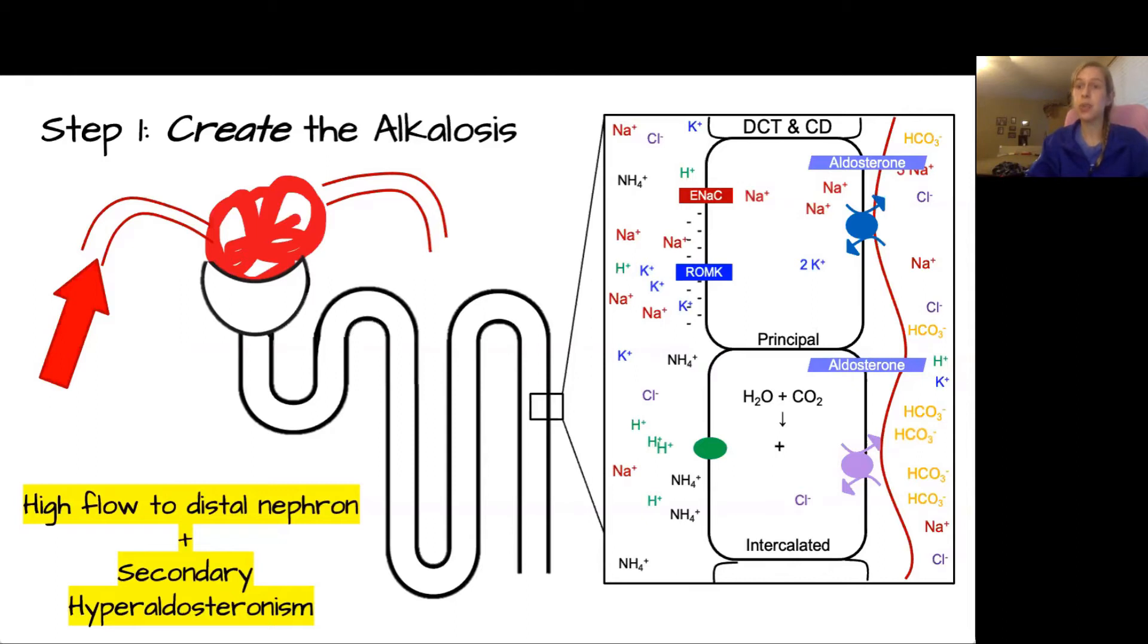Again, this is new production of bicarb. This is not filtered reabsorbed bicarb. This is de novo bicarb. So in the state of high flow to the distal nephron, in the presence of aldosterone, the end effect is that we're going to have a high amount of extra bicarbonate that's created and sent into the blood without paired hydrogen with it to neutralize it.